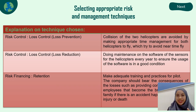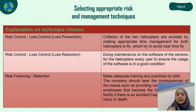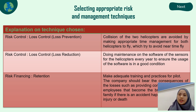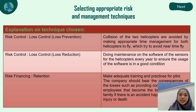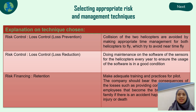For the risk management techniques: first, risk control on loss prevention — the collision risk is avoided by making appropriate time management for both helicopters so they do not fly at the same time. Second, risk control on loss reduction — do maintenance of the sensor software for the helicopters to ensure the software is in good condition, which can be done annually. Third, risk financing on retention — provide adequate training and practice for pilots, and the company should bear the consequences of losses by providing compensation for employees or their families in the event of injury or death.